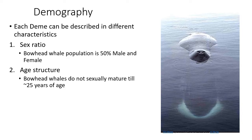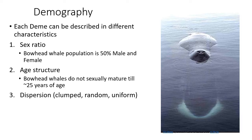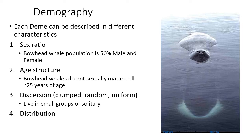Most bowhead whales don't reproduce until they are at least 25 years of age, so adults are 25 and older. Anything under 25 is generally a subadult, down to a newborn calf. Dispersion refers to whether individuals are clumped, random, or uniform. If they're all working together in a social group, they would be clumped. For bowhead whales, they live in small groups or are sometimes solitary, so they would be clumped.